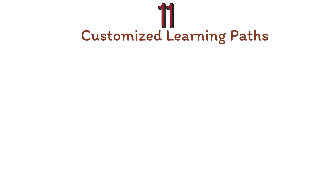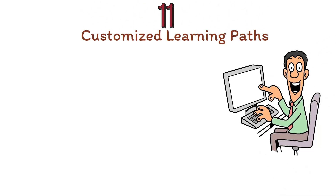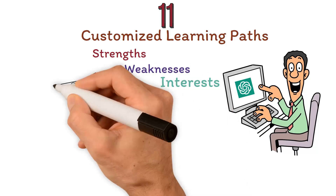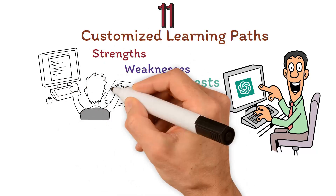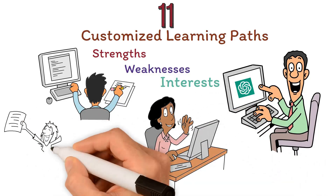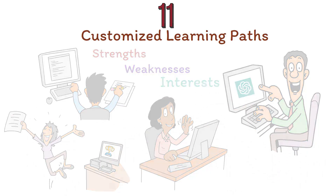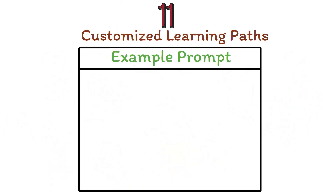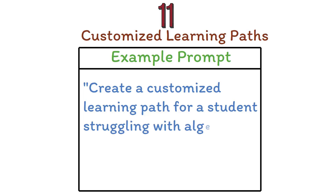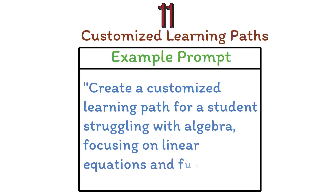Number eleven: customized learning paths. With ChatGPT, teachers can create personalized learning paths for their students, taking into account their strengths, weaknesses, and interests. By offering tailored content and activities, educators can more effectively address individual needs and help students achieve their full potential. Example prompt: Create a customized learning path for a student struggling with algebra, focusing on linear equations and functions.